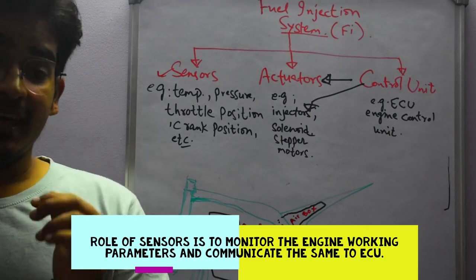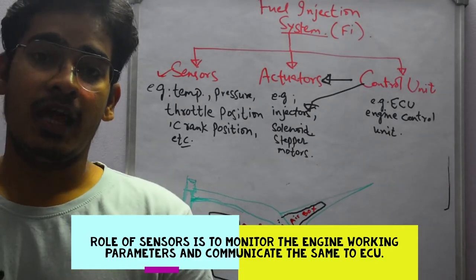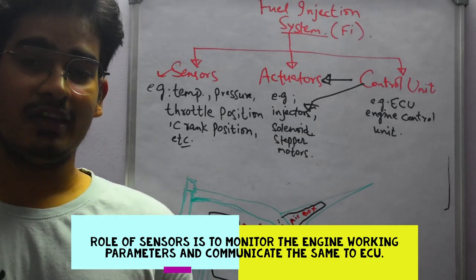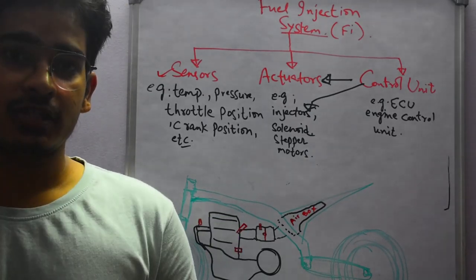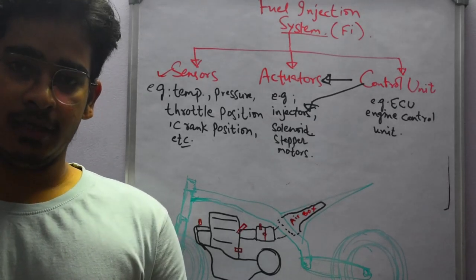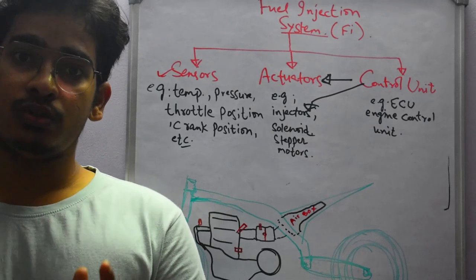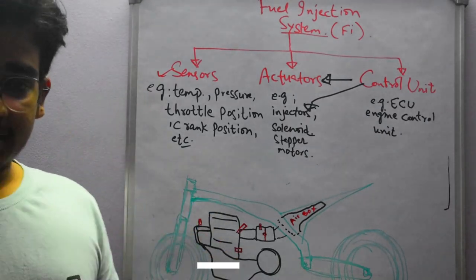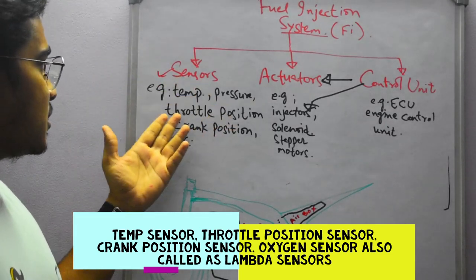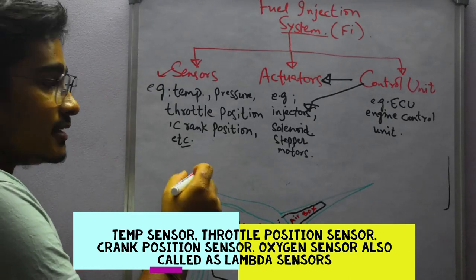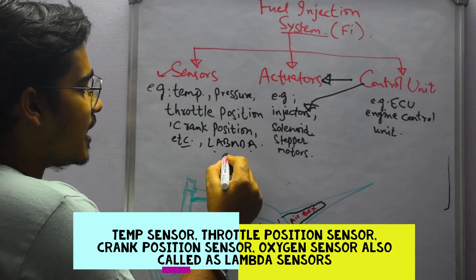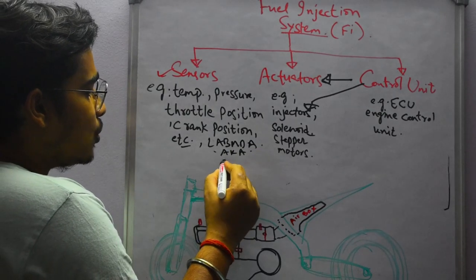Starting with the sensors — the role of sensors is to monitor the engine working parameters: engine load, temperature, and different variables that affect the performance and power output of the engine, and based on that, provide the right amount of fuel. Different sensors in the FI system include the temperature sensor, pressure sensor, throttle position sensor (TPS), crank position sensor, and the lambda sensor, also called the O2 sensor.